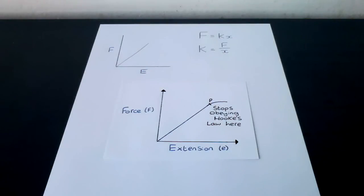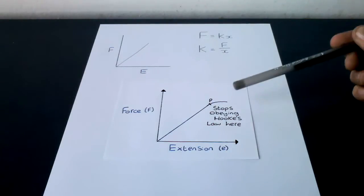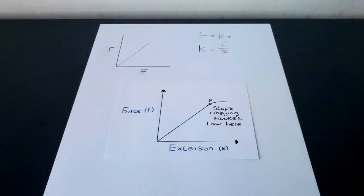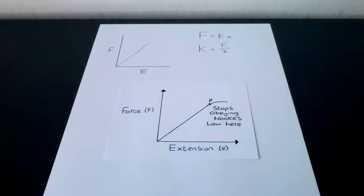In the diagram, if you extend the spring beyond point P, where it stops obeying Hooke's Law, and then unload it completely, it won't return to its original shape. It has been permanently deformed. We call this point the elastic limit, the limit of elastic behavior.